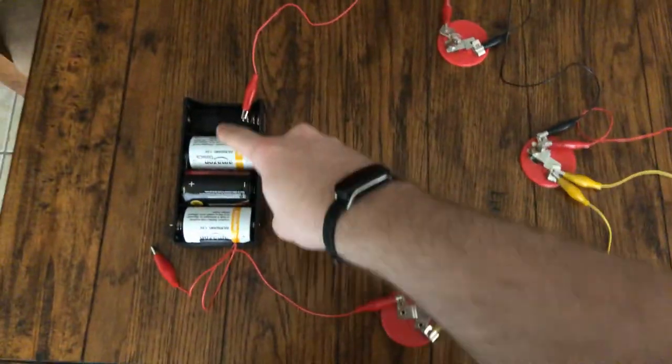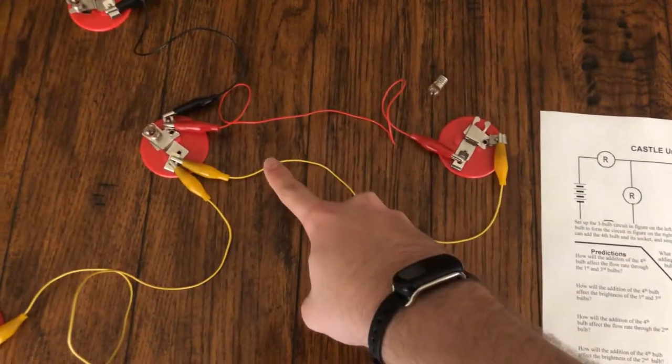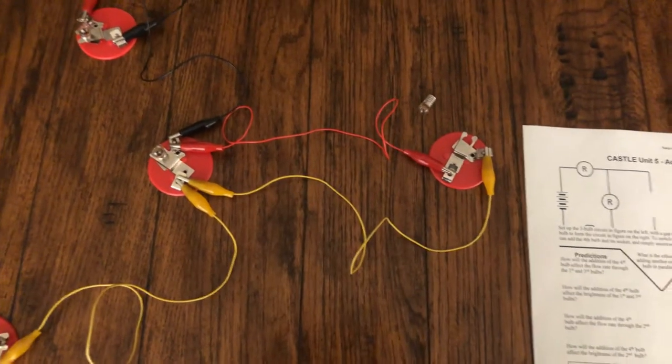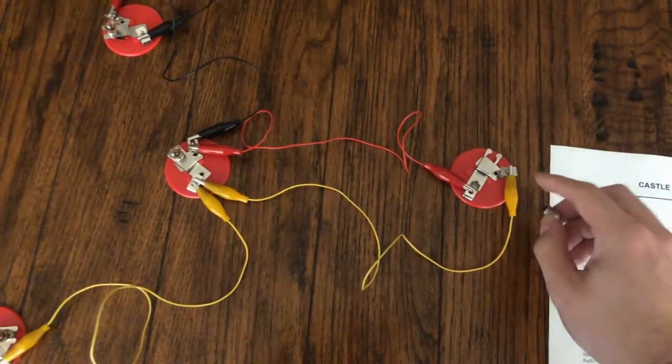So what we have is a circuit that has three round bulbs in series, and what we're going to do is add another bulb in parallel with that middle bulb. As you can see, I've just left this open here, so essentially what we have is just two wires open there.